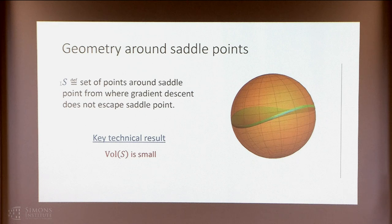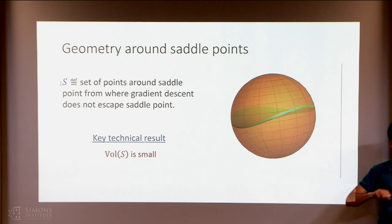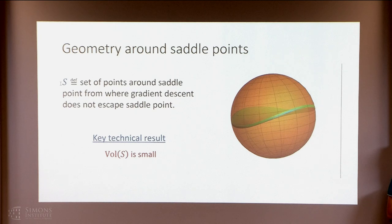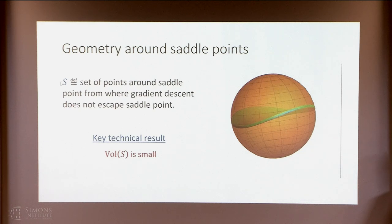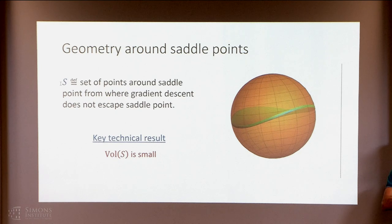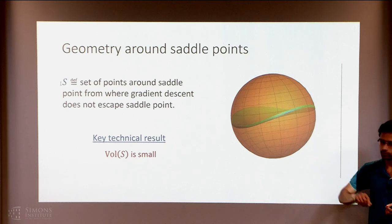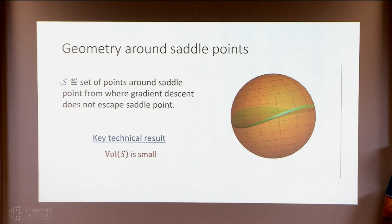Let's say the center of this ball is the saddle point. Define the set S to be all points in this ball from where, if you do gradient descent without any noise, you don't escape — you stay stuck inside the ball. The key technical result is that the volume of the set S is small. Think of how perturbed gradient descent works: we are somewhere in the ball, we add a little noise, and the probability of landing in S is very small because the volume of S is small. So with high probability, we fall in S-complement — the set of points from where gradient descent actually escapes.